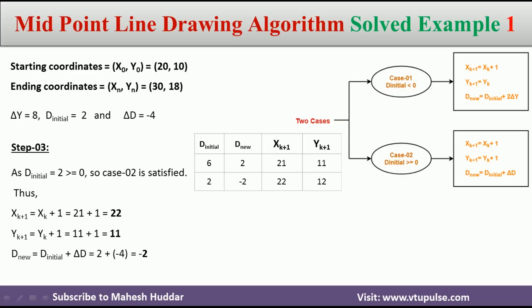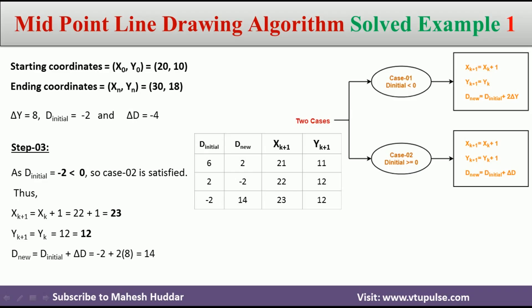d_new is minus 2, which becomes d_initial for the next iteration. Because minus 2 is less than 0, we need to select case 1. Using those three equations: xk+1 is calculated by adding 1 to the previous point — we get 23. yk+1 is obtained from yk with no addition needed, which remains 12. d_new is calculated using the case 1 equation and we get 14. So the new point is (23, 12) and d_new is 14, which becomes d_initial for the next iteration.